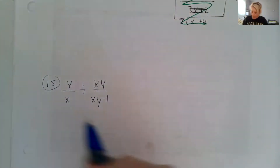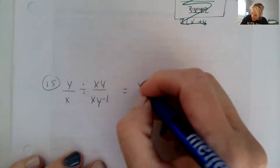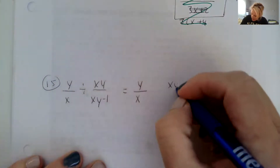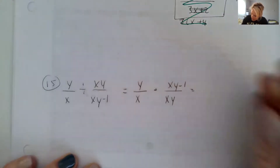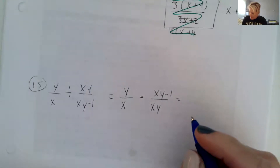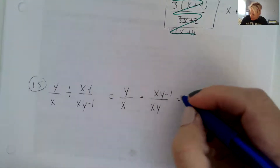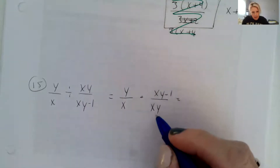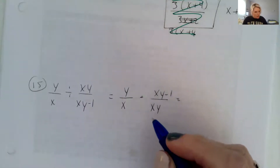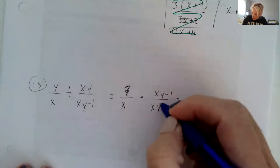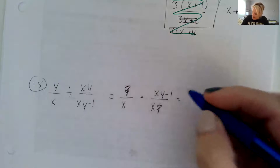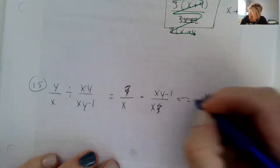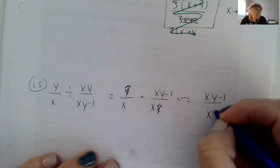Number 15 is asking us to divide. So we're going to keep the first fraction, flip the second fraction, and then switch to multiplication. And so it looks like we can cancel a y over a y. And that looks about it. So we have x times y minus one over x squared.